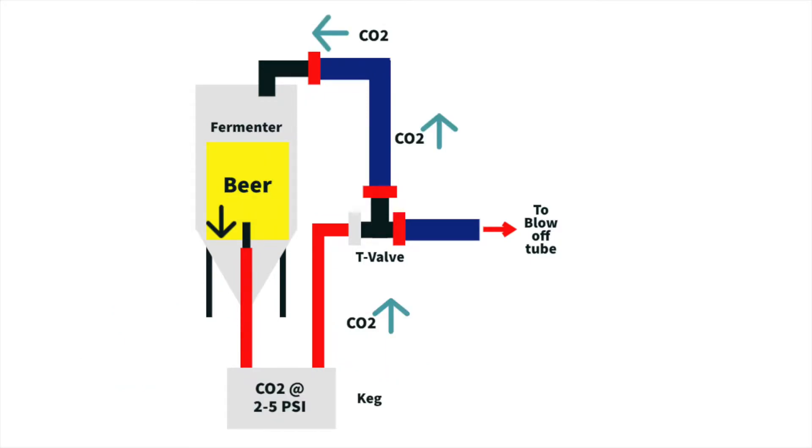From there, if we pressurize the keg on the bottom with 2 to 5 psi of CO2, with everything open flowing, the CO2 would flow from the keg up to the T-valve through the line and then push into the fermenter. Because the fermenter would be filled with beer and the beer would flow from the bottom of the fermenter to the keg, beer would flow downwards into that keg. And as you would see over time, CO2 would fill up the fermenter and beer would fill up the keg until it's completely filled with beer.